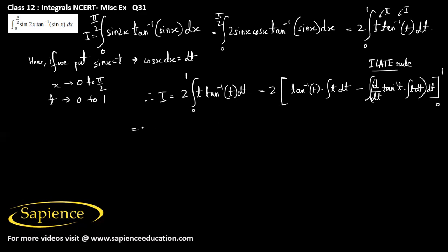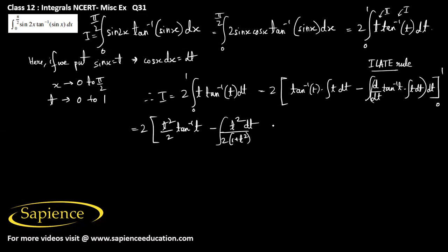Since ∫t dt = t²/2, this becomes 2·[t²/2·tan⁻¹(t) − ∫(1/(1+t²))·(t²/2) dt], from 0 to 1.